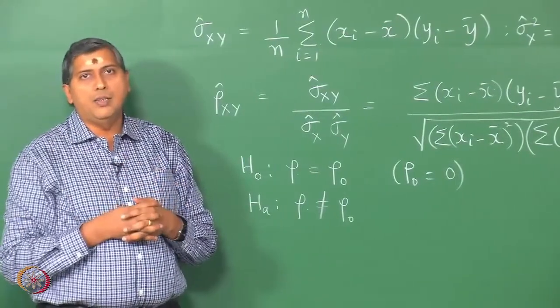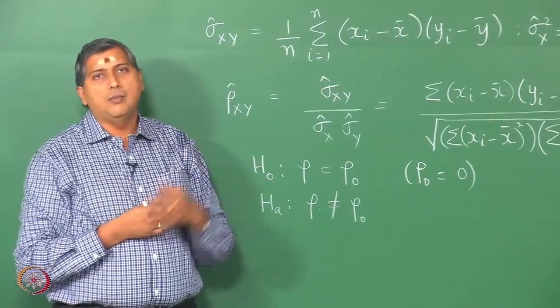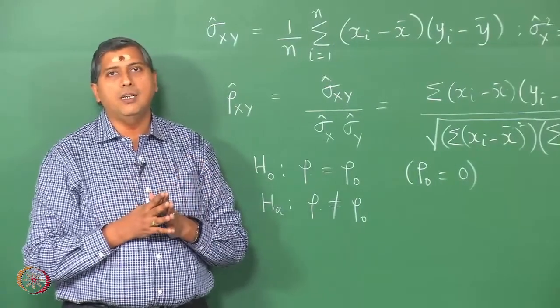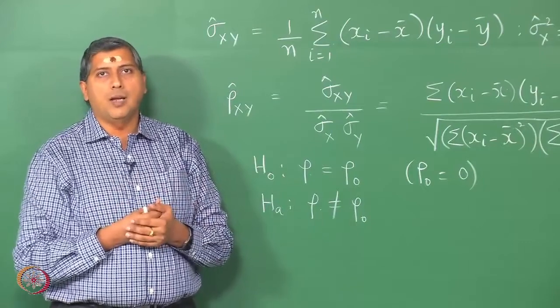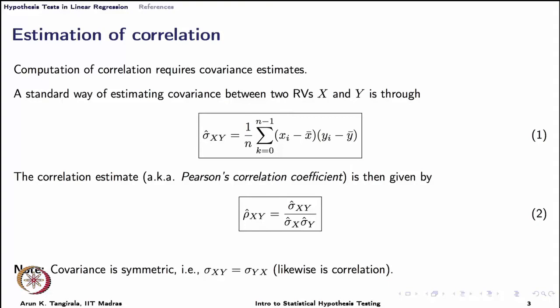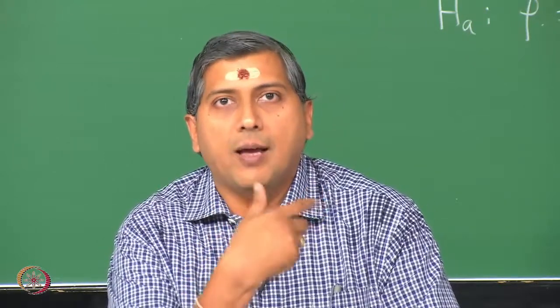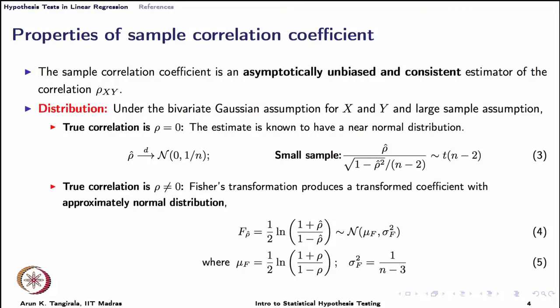Knowing this difficulty, many researchers spent a lot of time several decades ago and came up with the distributional properties of the sample correlation under some restricted conditions, which we will discuss shortly, and then proceed to the hypothesis test for correlation. It is also worth mentioning that covariance is symmetric — whether we write it as sigma-xy or sigma-yx, it is one and the same — and likewise for correlation. The ordering does not matter. The properties and sampling distribution of the sample correlation coefficient are not easy to obtain.